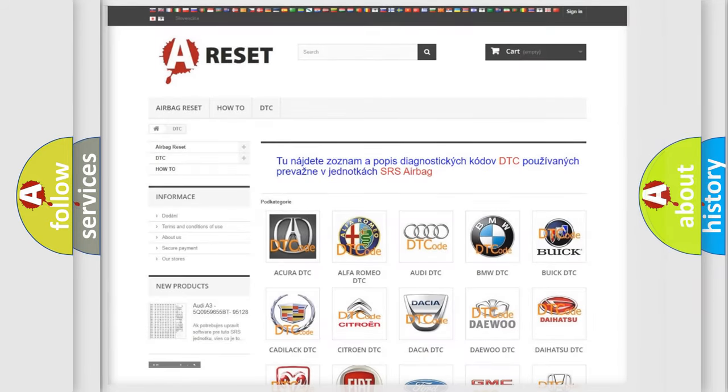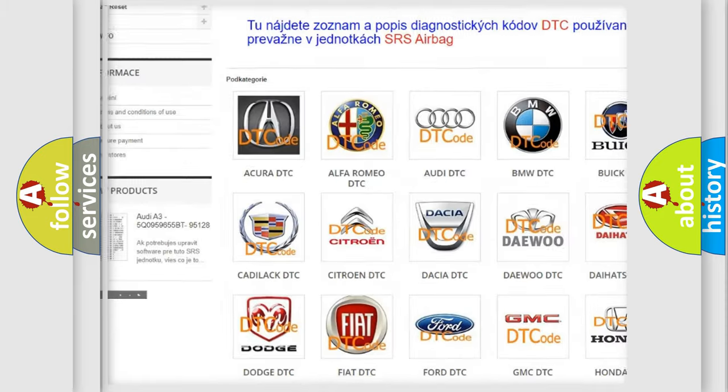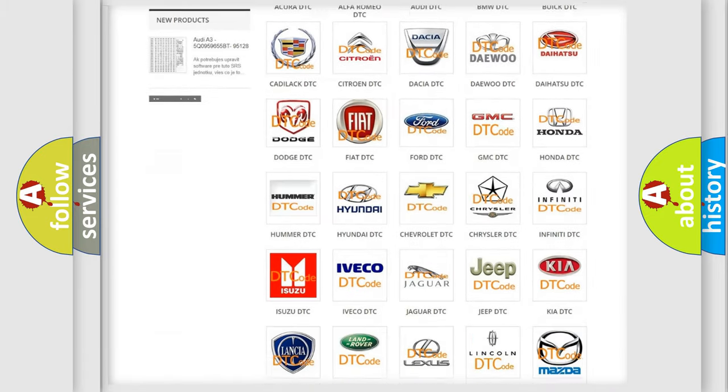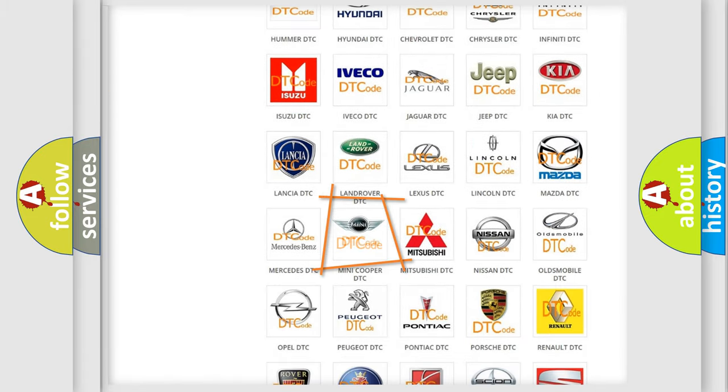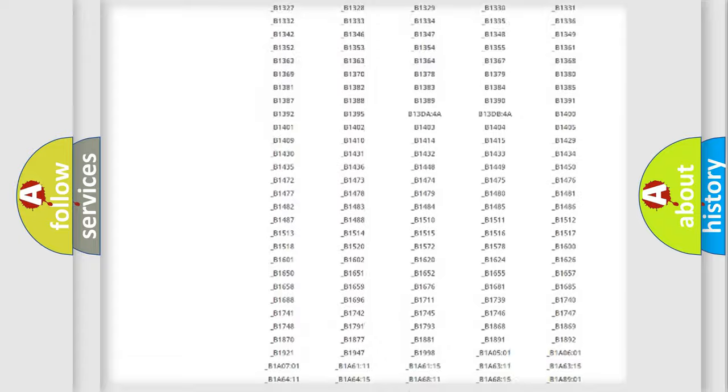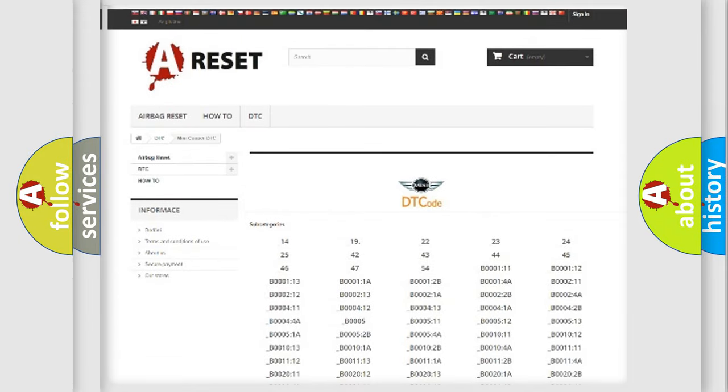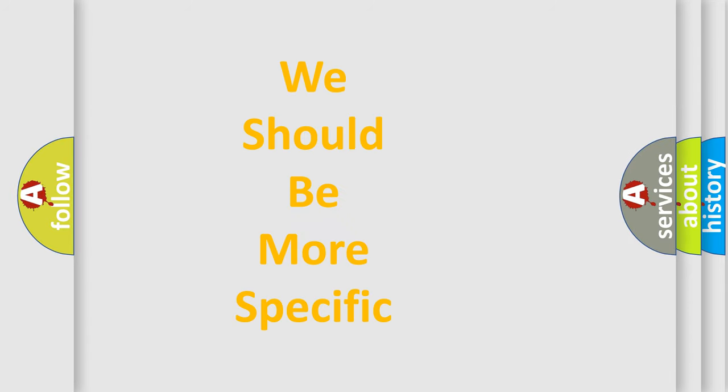Our website airbagreset.sk produces useful videos for you. You do not have to go through the OBD2 protocol anymore to know how to troubleshoot any car breakdown. You will find all the diagnostic codes that can be diagnosed in a car, many vehicles, and many other useful things. The following demonstration will help you look into the world of software for car control units.